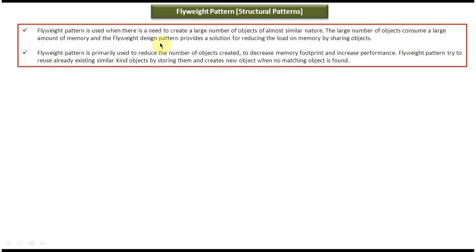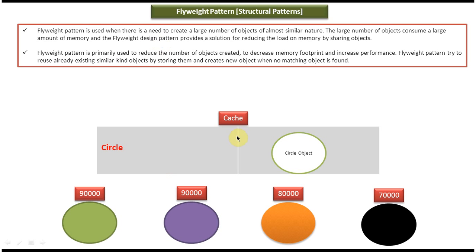We will see one example so that you will understand this design pattern very clearly. Here you can see in the hash I have created one circle object and put it there. The key is 'circle' and the value is a circle object, but it doesn't have any color. Suppose I want to create 90,000 circle objects which are green in color and 90,000 circle objects which are blue in color.